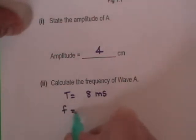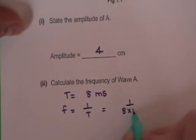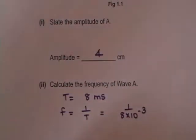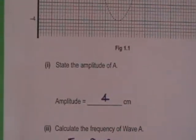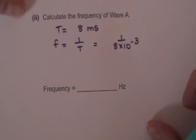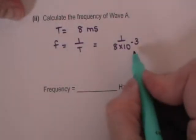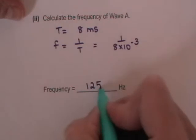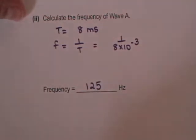And therefore the frequency is 1 over the time period which is 1 over 8 by 10 to the minus 3. And whenever you do that calculation you end up with an answer of 125 hertz. Don't forget about the 10 to the minus 3. It's a very easy thing to forget about. And the answer comes out as 125 hertz.